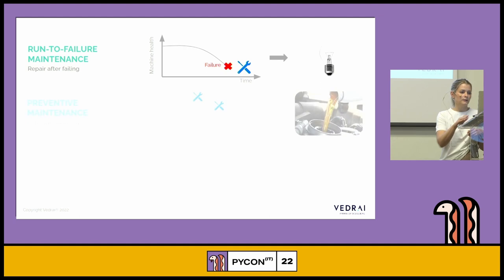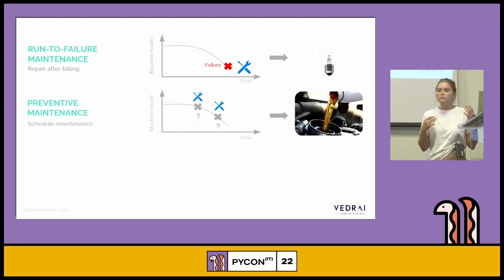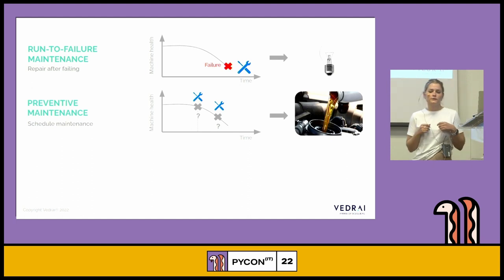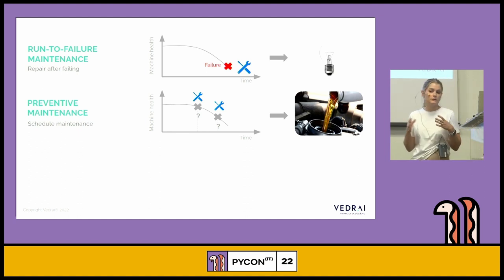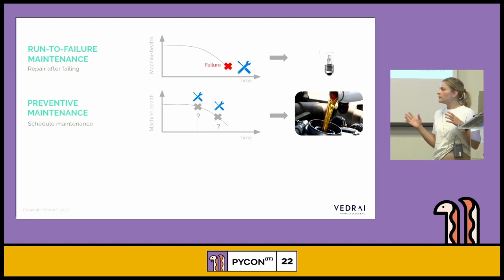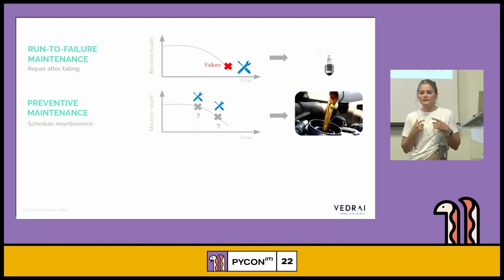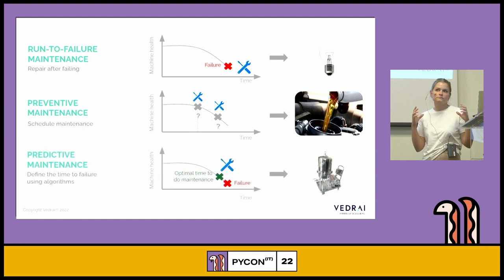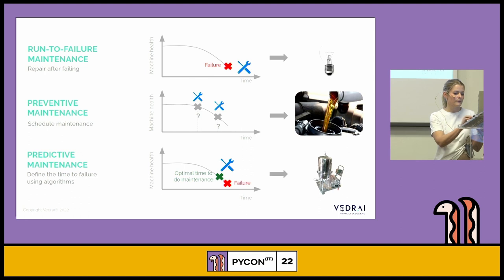The second type is preventive maintenance, where we schedule the maintenance. The most familiar scenario is having a car and changing the oil every 15,000 kilometers. However, in this case some unnecessary corrections are applied and we probably increase costs which are not actually useful.